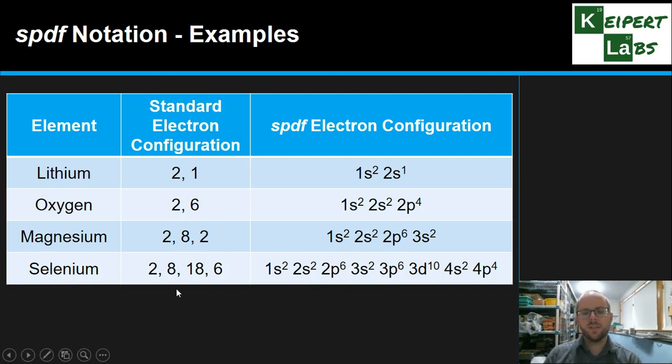Now selenium is one that's quite interesting here, so I picked that one because we have a significant number of electrons here. We've got 34 specifically. You can notice that its SPDF electron configuration is quite long because we need to be more specific there. And I'll show you a shortcut that we'll use in a second.